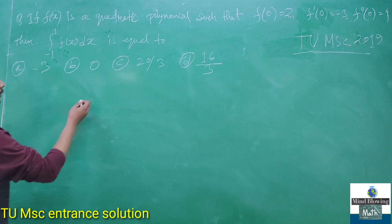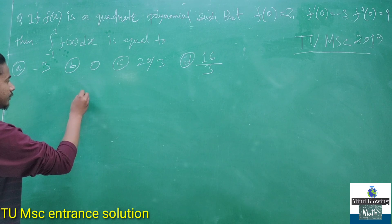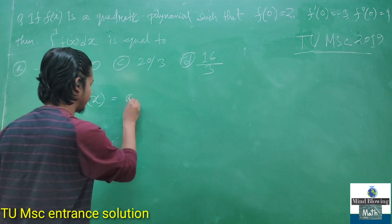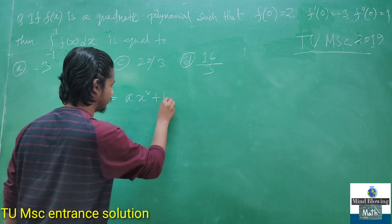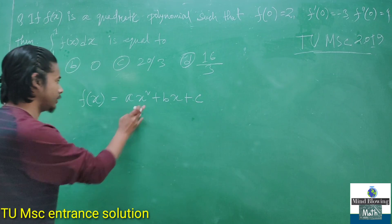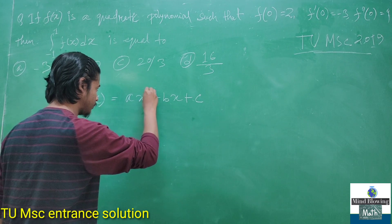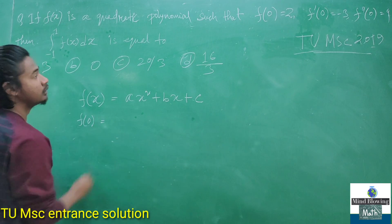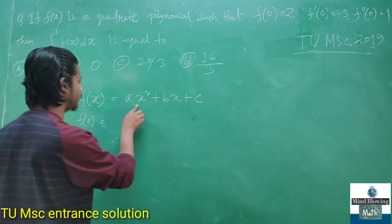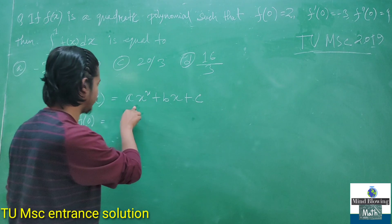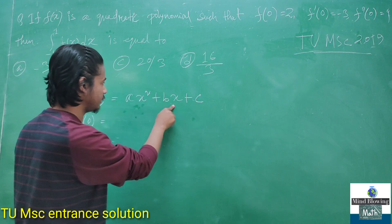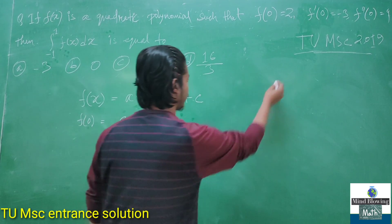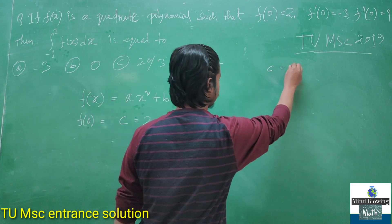From the very basics, let f(x) be the quadratic polynomial ax² + bx + c — the standard equation. Now, given f(0) = 2, whenever x = 0, the ax² and bx terms get cancelled, so c = 2. We have found the constant value c = 2.